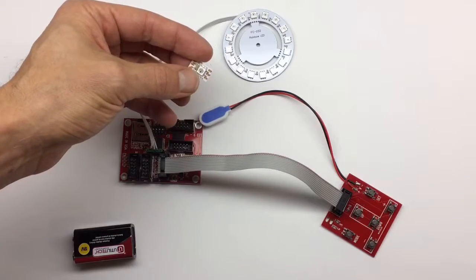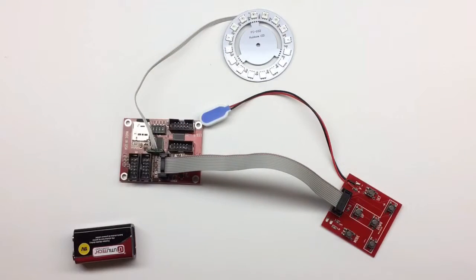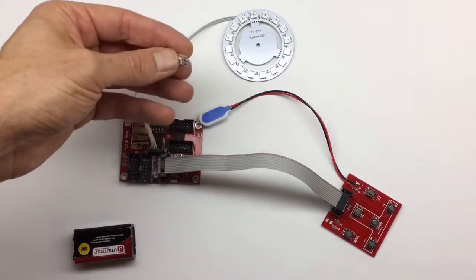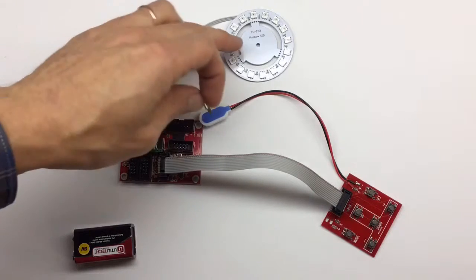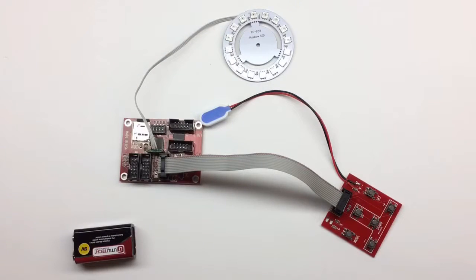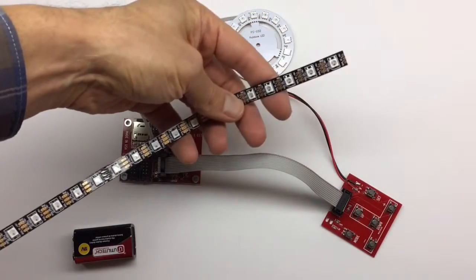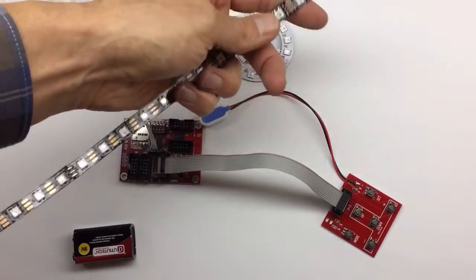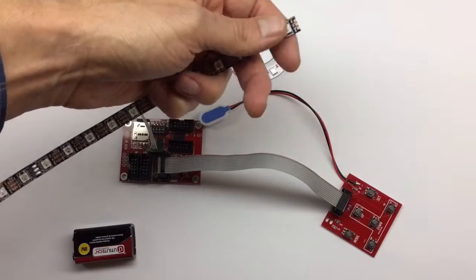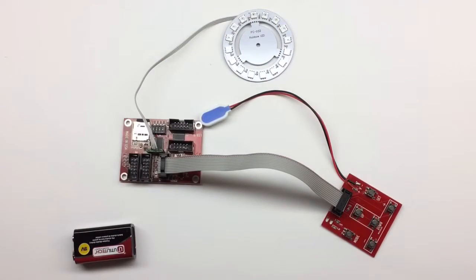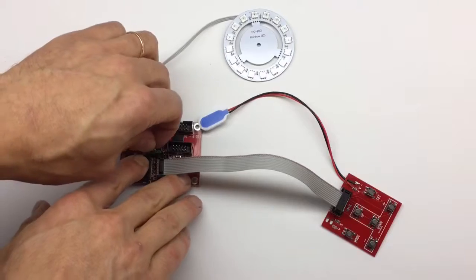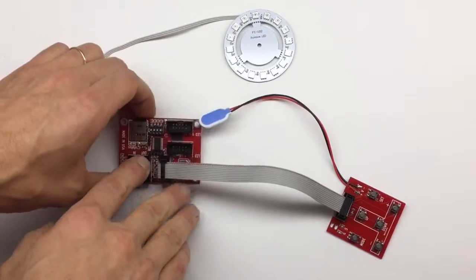They come in different forms. Here's a single one, here's a round PCB board, and you can also buy a line like this. Again, it only requires three wires to connect. On the LED controller board, we're going to use this socket here with three wires. I already have a socket attached to my round board.